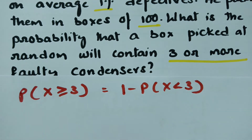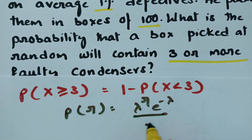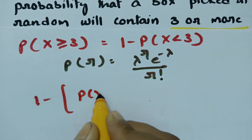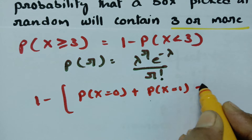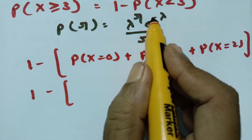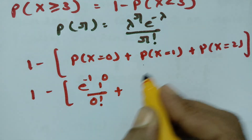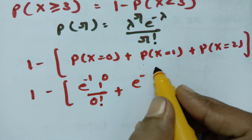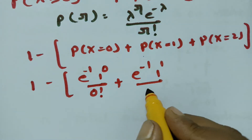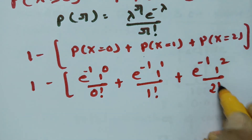According to Poisson distribution, the formula is: probability of r equals e to the power minus lambda, times lambda to the power r, divided by r factorial. If I expand, this will be 1 minus [probability of x=0 plus probability of x=1 plus probability of x=2]. Substituting lambda equal to 1: e to the power minus 1 times 1 to the power 0 over 0 factorial, plus e to the power minus 1 times 1 to the power 1 over 1 factorial, plus e to the power minus 1 times 1 squared over 2 factorial.